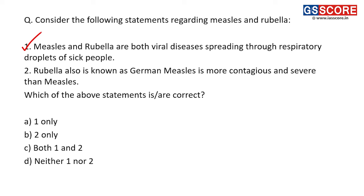Second statement: rubella, also known as German measles, is more contagious and more severe than measles — this is incorrect. While rubella is indeed known as German measles, it is actually less contagious and less severe than measles. Measles is more harmful. Only the first statement is correct, so the answer is A — 1 only.